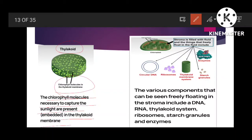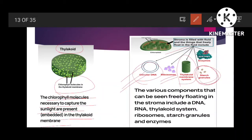The stroma and its contents include the circular DNA of the chloroplast — just as mitochondria have their own DNA, chloroplasts also have their own circular DNA. The stroma also contains ribosomes, the thylakoid membrane system, starch granules produced as a result of photosynthesis, and enzymes required for photosynthesis. The dark reaction of photosynthesis occurs in the stroma, so the enzymes required for that reaction are present there.